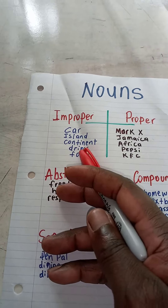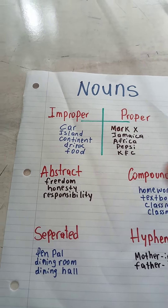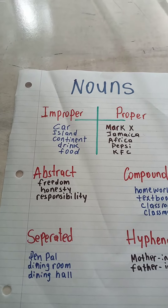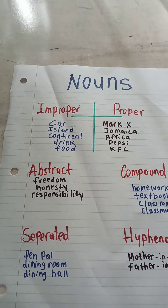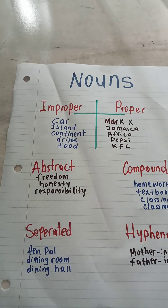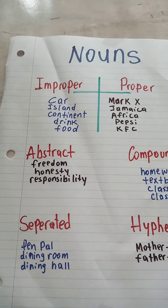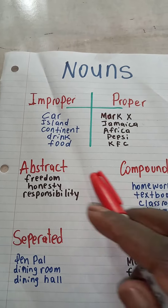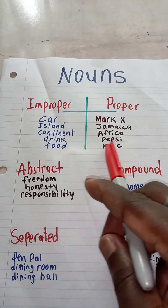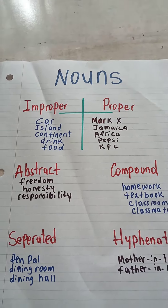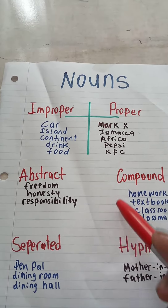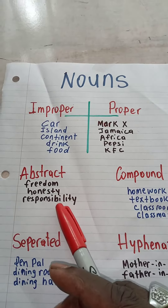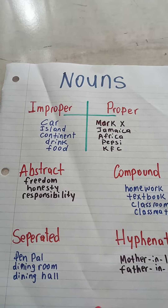A drink — Pepsi — that's proper. And all different types of drinks that you know. Food is improper, but KFC is a proper noun. And of course, you have all different types of nouns.